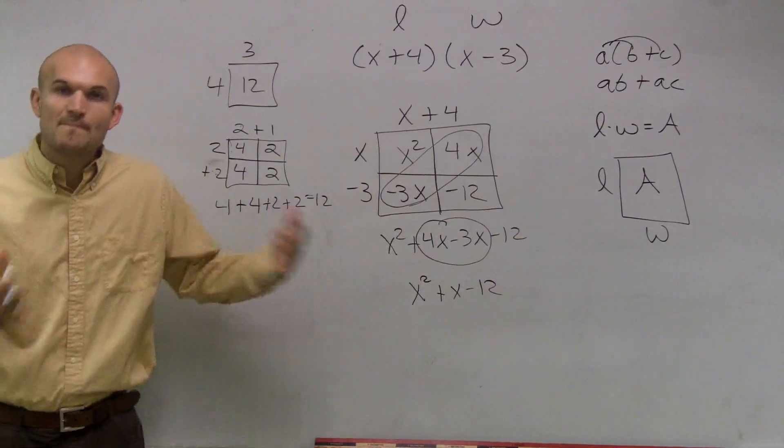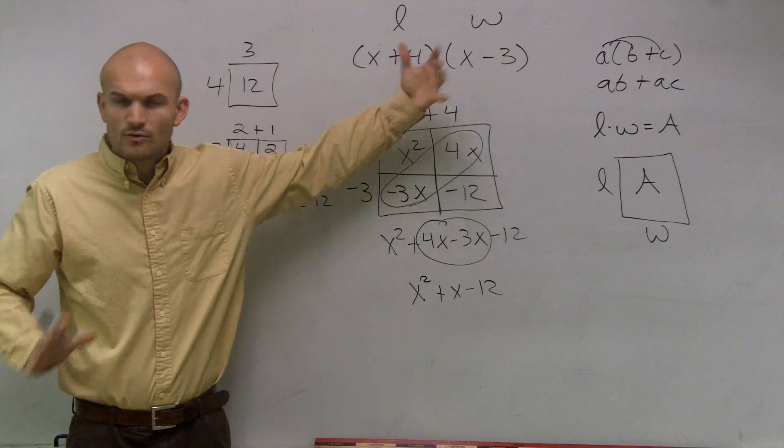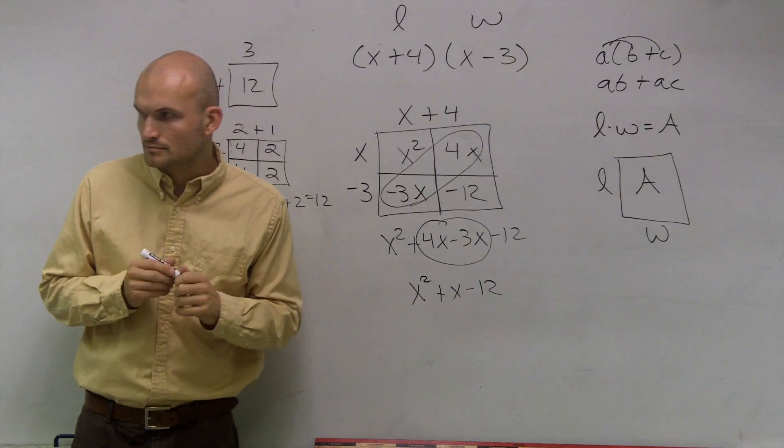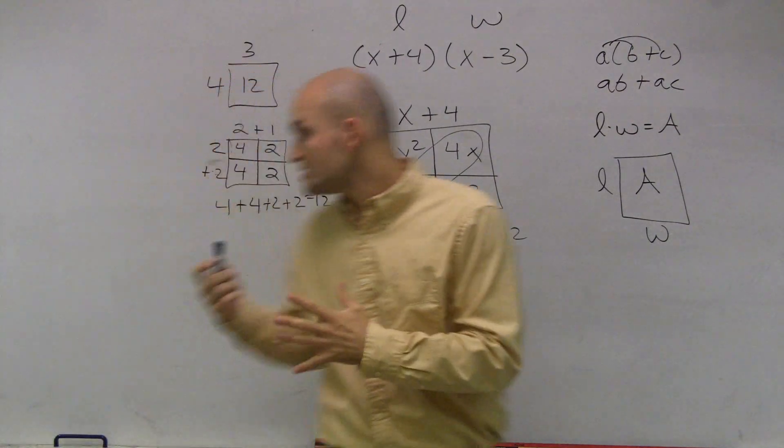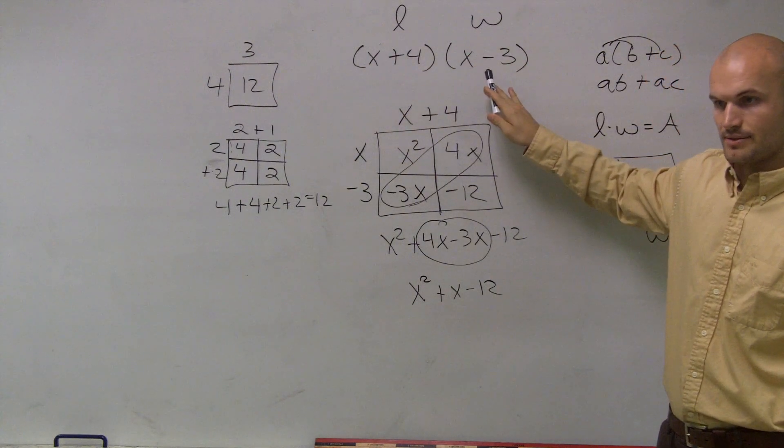And that is kind of a method for you guys to be able to multiply binomials. Does that make sense? We can represent binomials as an area. So what does not make sense? Okay. Do you understand then? Do you understand how I can represent this as length and this times the width, right?